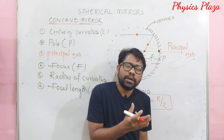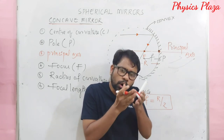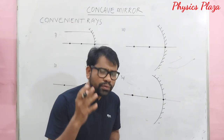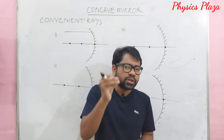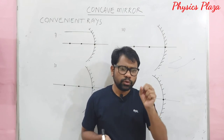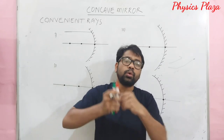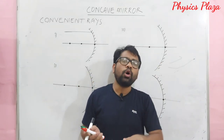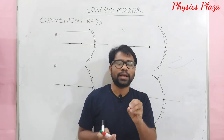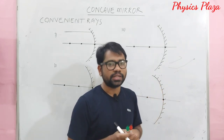Now we will discuss why a concave mirror is called a converging mirror and what are the convenient rays used to construct ray diagrams. Among the lakhs of light rays coming from any object, a few are very convenient for making ray diagrams. Let us discuss what those convenient rays are for a concave mirror.